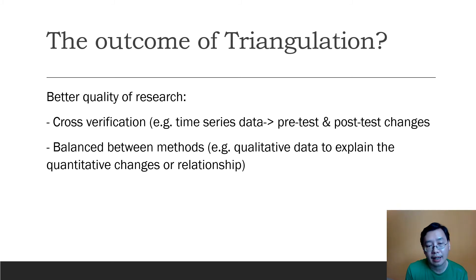The second aspect is the balance between methods. Like I said, certain methods have advantages and disadvantages. So when you're using more than one method, you are actually offsetting each other. The outcome is usually better quality of research.